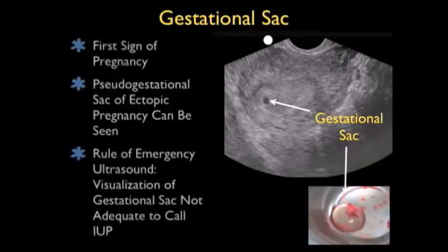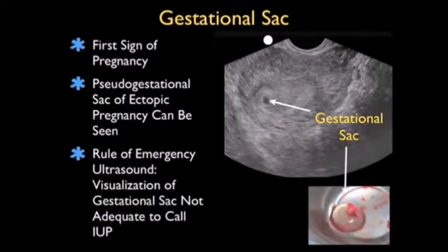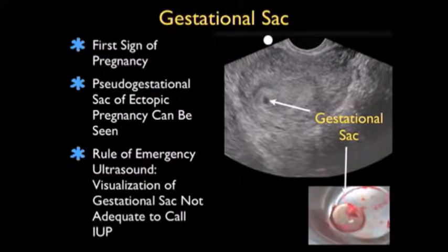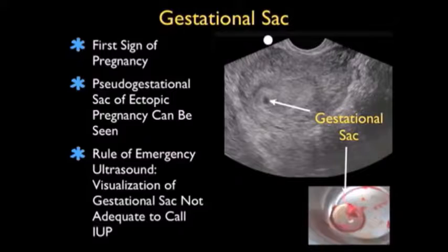The first finding during an intrauterine pregnancy is the gestational sac — a small round, dark or hypoechoic circle relative to the rest of the uterus. We also see an actual gestational sac specimen with a translucent membrane-type appearance. Unfortunately, the gestational sac alone is not diagnostic of an intrauterine pregnancy, because a pseudogestational sac of ectopic pregnancy can be seen from hormonal stimulation. The general rule is that visualization of a gestational sac alone is not adequate to call an intrauterine pregnancy.